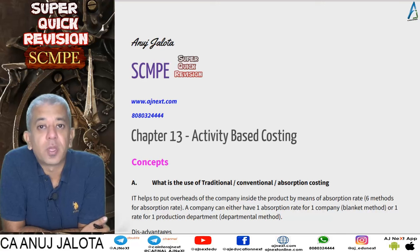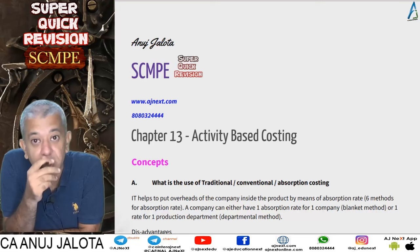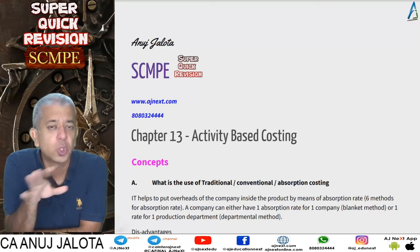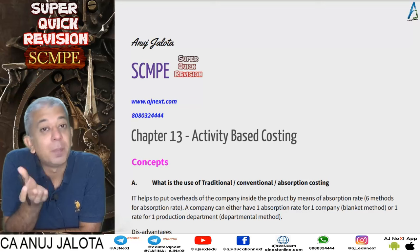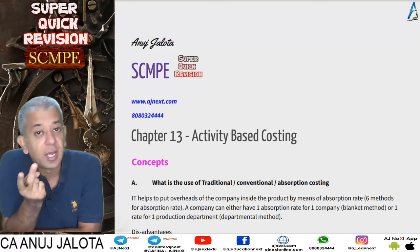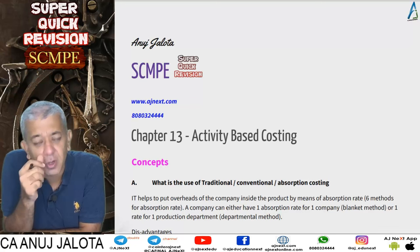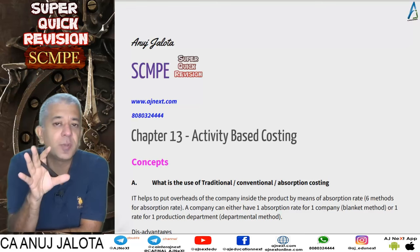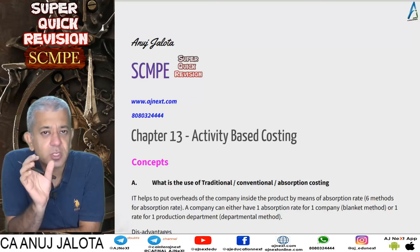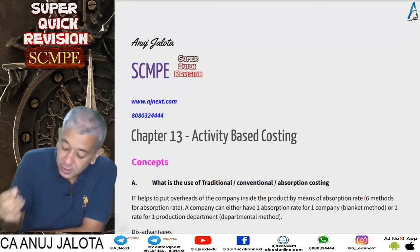Welcome back to our super quick revisions, aiming to revise your topics faster. We start with chapter number 13: Activity Based Costing. This topic hasn't been asked in one attempt today, but it is a short topic that will be coming. Activity Based Costing incorporates many topics inside it, namely customer level profitability, direct product profitability, target costing, value chain, and environmental management accounting.